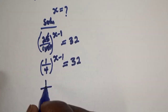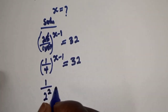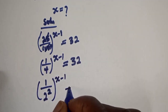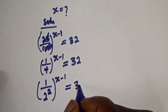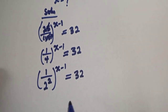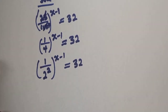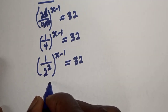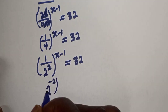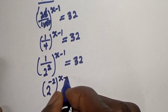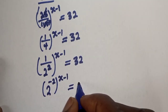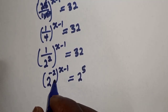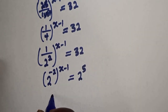1 over 4 can be written as 2 squared, so we have 2 squared to the power of s minus 1, is equal to 32. This can be written as 2 raised to the power minus 2, to the power of s minus 1, is equal to 32, which can be written as 2 raised to the power 5.